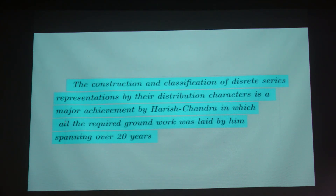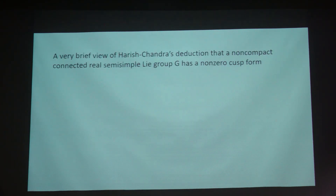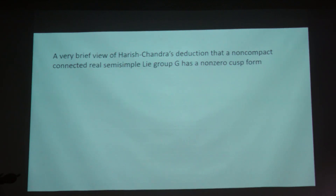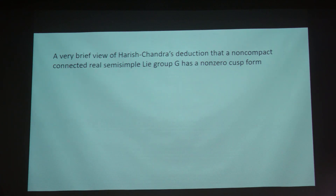Theorem 1 here is purely a theorem about distributions — it doesn't say anything about representations yet. Given a λ, there exists an invariant eigen-distribution with such and such properties. The complementary theorem says: for each such λ there exists a discrete series representation — irreducible, with matrix coefficients square-integrable and the representation unitary — such that the distribution character of the discrete series is given by the Harish Chandra distribution in Theorem 1, up to a sign. The construction and classification of discrete series representations by distribution characters is a measure of how much groundbreaking work was laid by Harish Chandra spanning over 20 years.